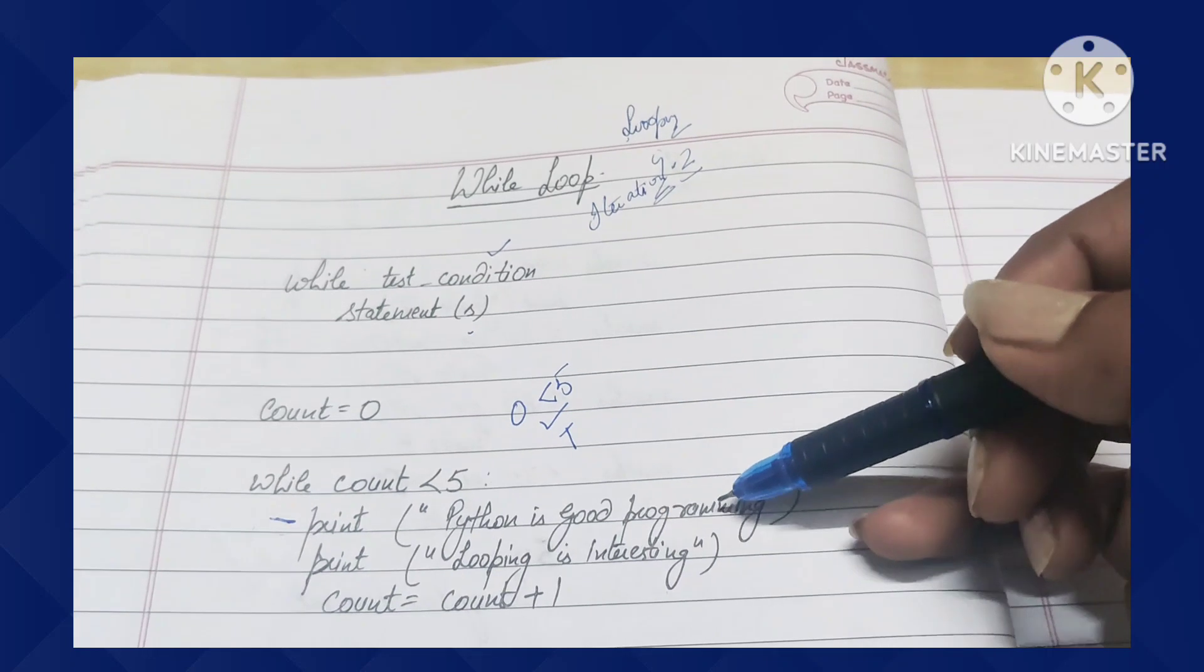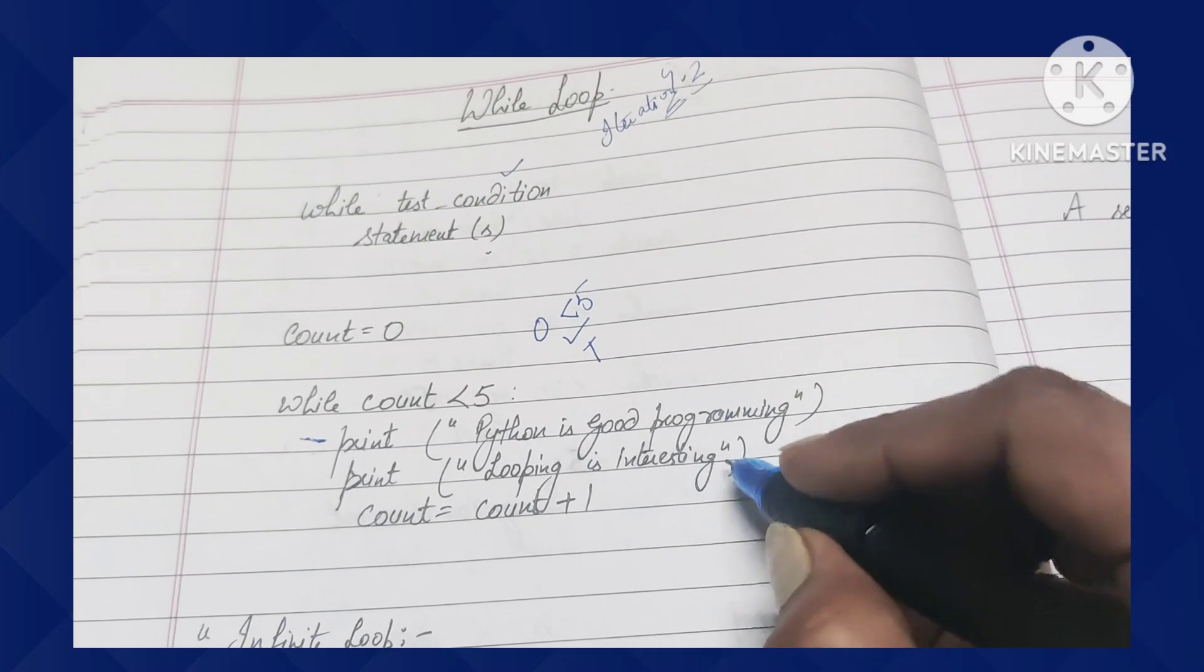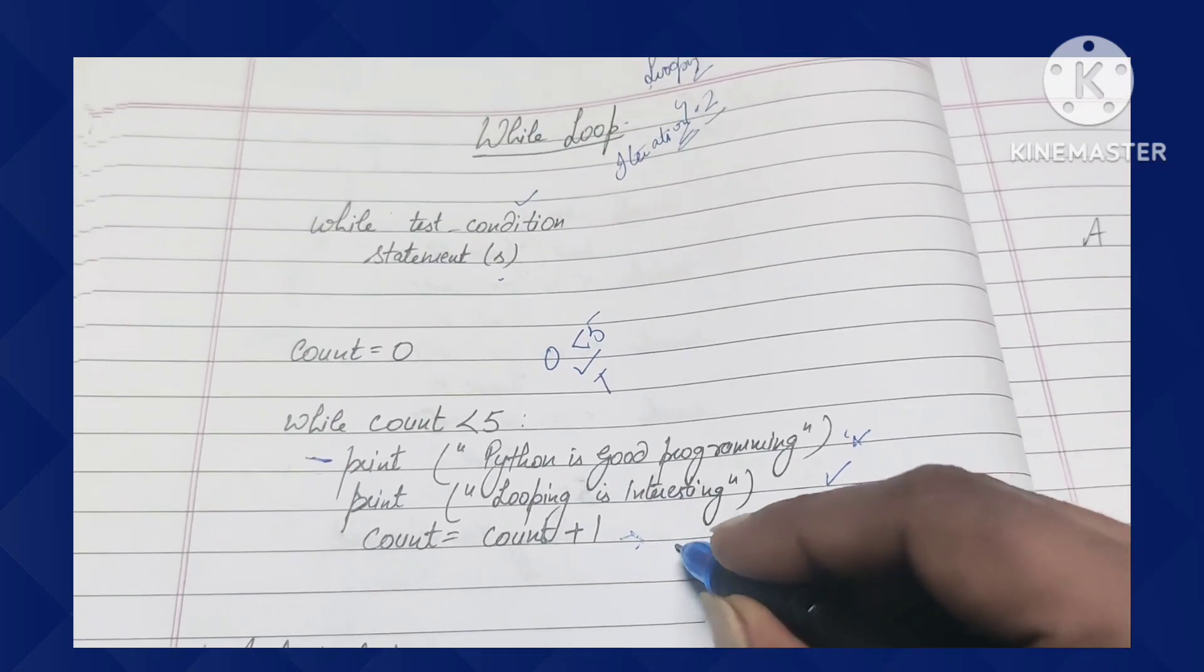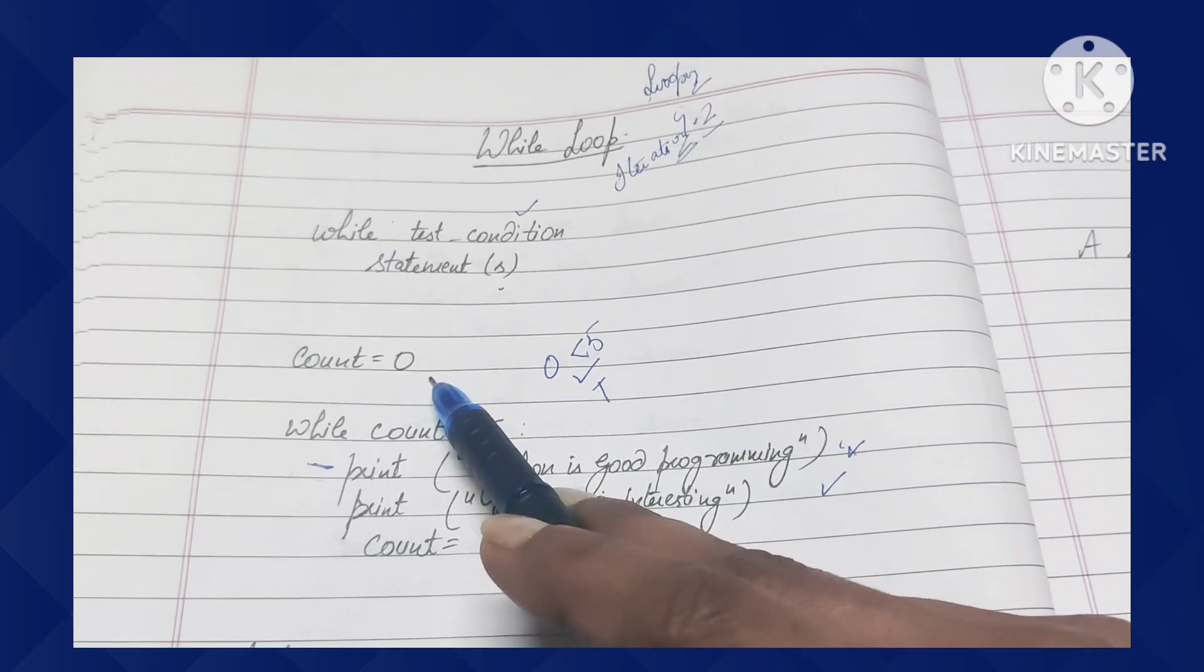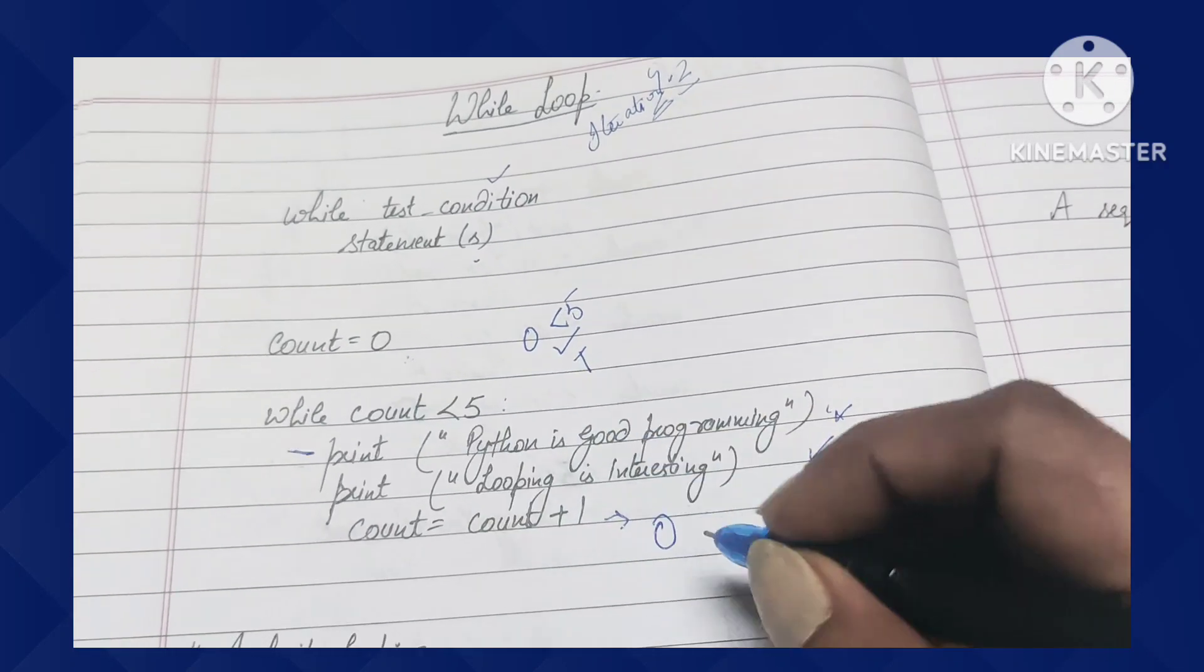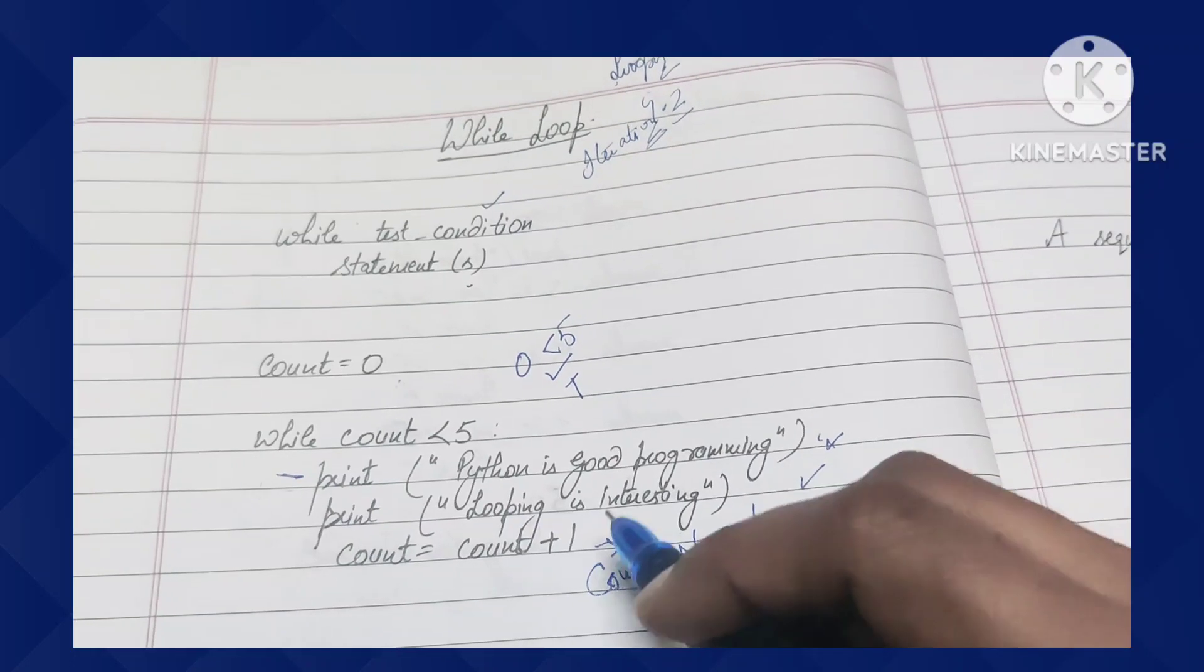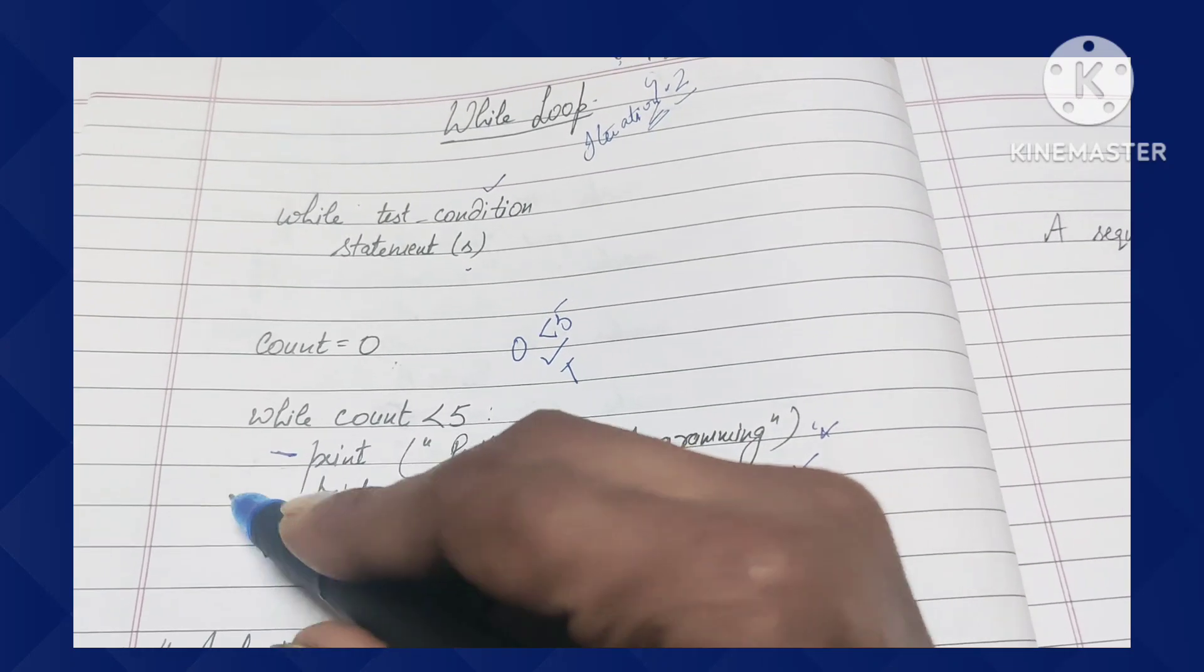Here are statements: 'Python is a good programming' and 'Looping is interesting'. These two lines will be printed automatically. Then count equals count plus 1. In initialization, we started with 0. With the increment operator, 0 plus 1 equals 1. So the value of count is 1. The control will automatically reach back to the condition.